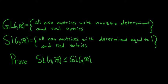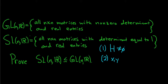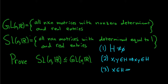To prove it's a subgroup we have to satisfy the subgroup criteria, which says three things. One, our set H — in this case the Special Linear Group — is not empty. Two, given any two elements x, y in H, the product also has to be in H. This is saying that H is closed under the group operation. And three, given an element x in H, the inverse element also has to reside in H — meaning H is closed under inverses.